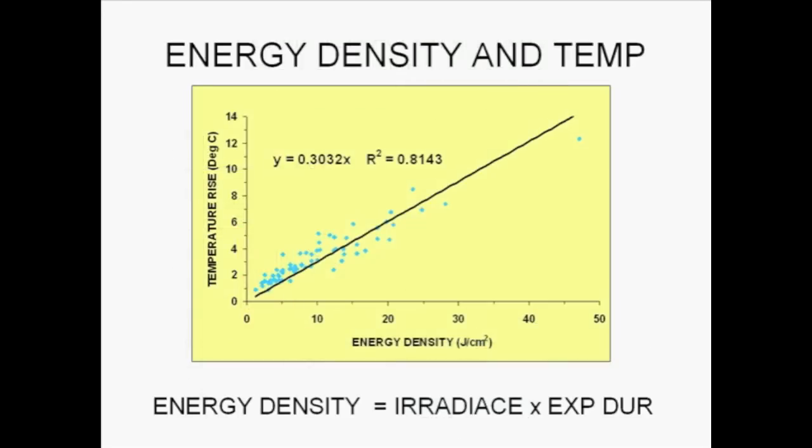This graph shows that the total accumulated energy delivered to the tooth is correlated with the potential for developing increase in intrapulpal temperature. From this graph it can be seen that, for the restoration used to generate the data, application of 3.3 joules per centimeter squared of blue light results in a 1 degree centigrade intrapulpal temperature increase.